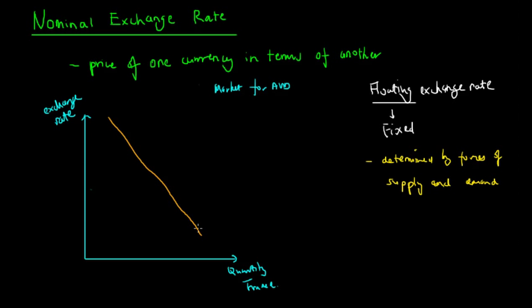The demand curve for an exchange rate is also downward sloping. This is because as the price of the exchange rate decreases, people tend to purchase more of it because the exports of that country become cheaper. Looking at this in a direct quote fashion, we have AUD to USD — how much one AUD is required to buy units of US dollars.